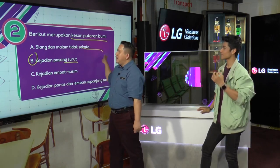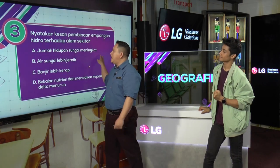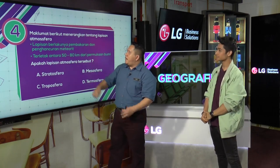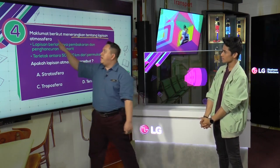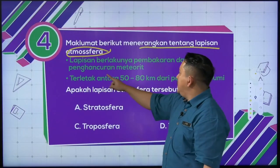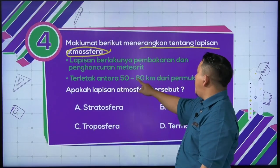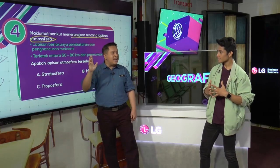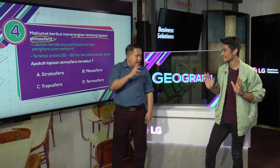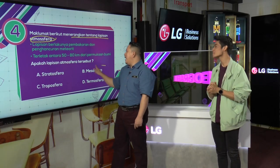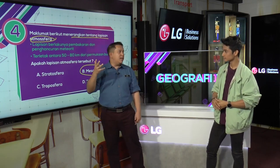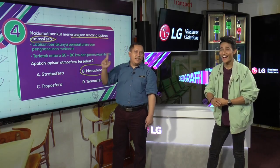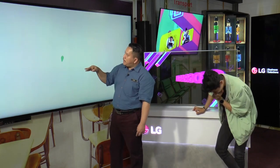Kita pergi soalan nombor empat. Maklumat berikut menerangkan tentang lapisan atmosfera. Lapisan berlakunya pembakaran dan penghancuran meteorot, terletak antara 50 hingga 80 kilometer dari permukaan bumi. Apakah lapisan atmosfera tersebut? Kalau tak tahu memang tak boleh jawab. Jawapan dia adalah mesosfera. Kalau tak tahu tentang fakta, pilih saja mana yang nak A, B, C atau D — boleh pilih betul atau salah.